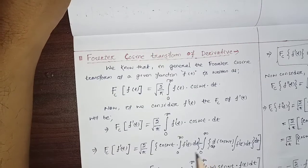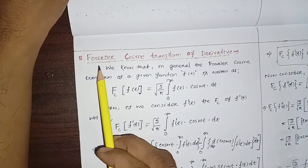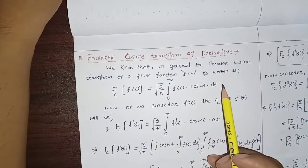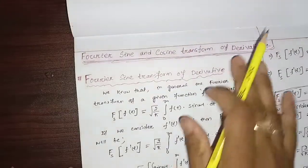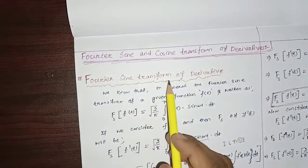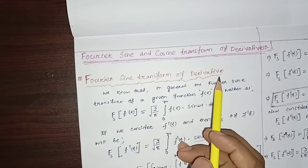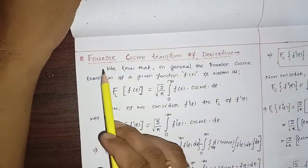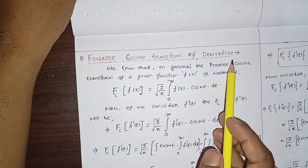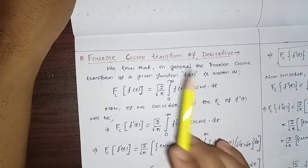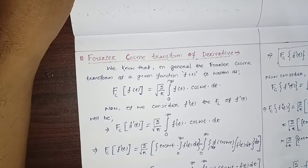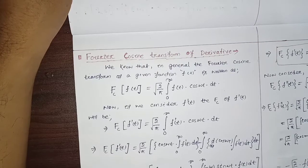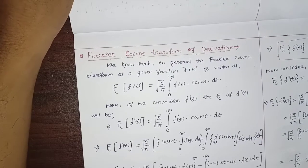Today we are going to discuss about Fourier Cosine Transform of derivatives. In our last class we discussed in detail about Fourier Sine Transform of derivatives. As I mentioned, Fourier Sine Transform of derivatives and Fourier Cosine Transform of derivatives are essential to solve the application part of Fourier cosine and sine transform.